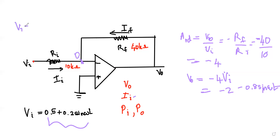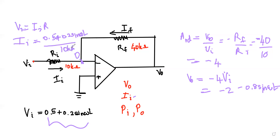To find the input current, use Ohm's law: Ii = Vi / Ri. Vi is 0.5 plus 0.2 sin(ωt), and Ri is 10 kilo-ohms. Dividing gives the input current as 0.05 plus 0.02 sin(ωt) milliamperes.